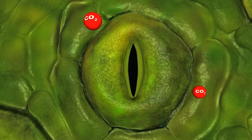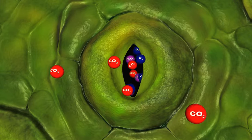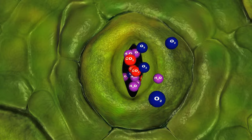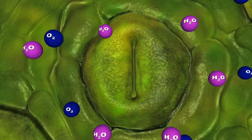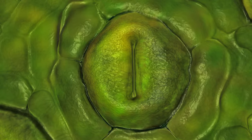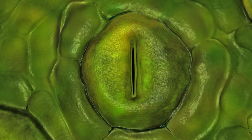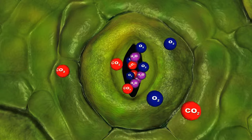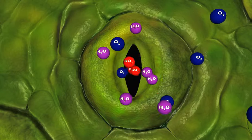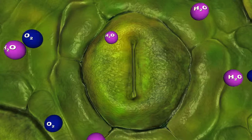Plants cannot absorb carbon dioxide without losing water vapour. Thus, transpiration is inevitable during photosynthesis.